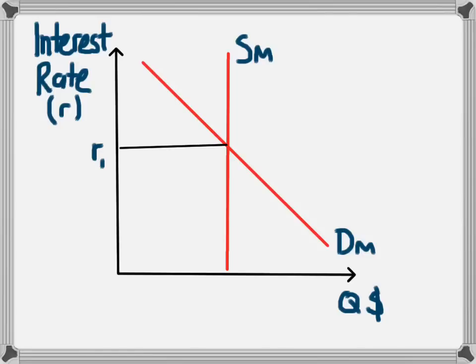We'll quickly run through the reverse situation, where the government decides to decrease the supply of money in the economy. To decrease the supply of money they need to take money away from people, and the way they do this is to issue government bonds. People purchase those bonds and hand money over, decreasing the supply of money. The bonds will carry a high interest rate so that people will want to buy them.